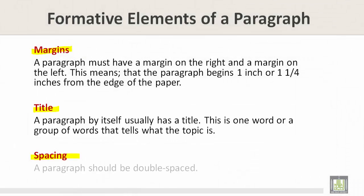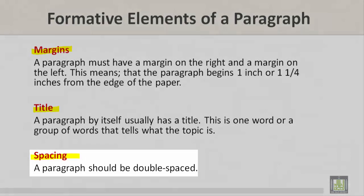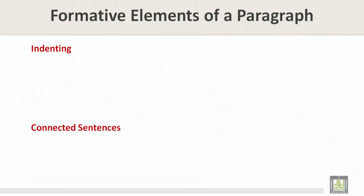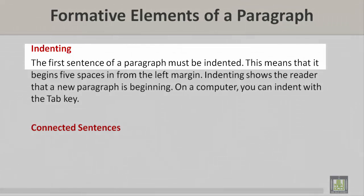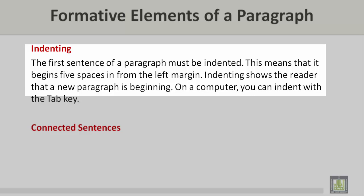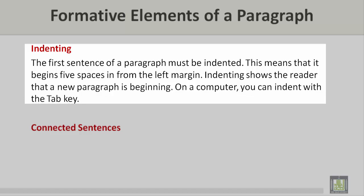Spacing. A paragraph should be double spaced. Indenting. The first sentence of a paragraph must be indented. This means that it begins five spaces in from the left margin. Indenting shows the reader that a new paragraph is beginning. On a computer, you can indent with the tab key.